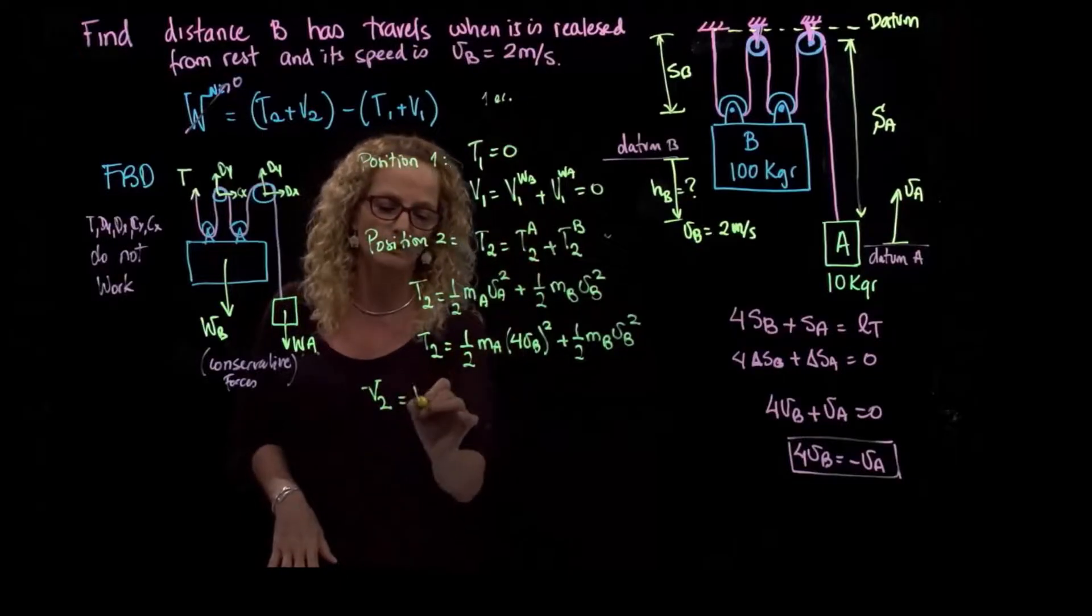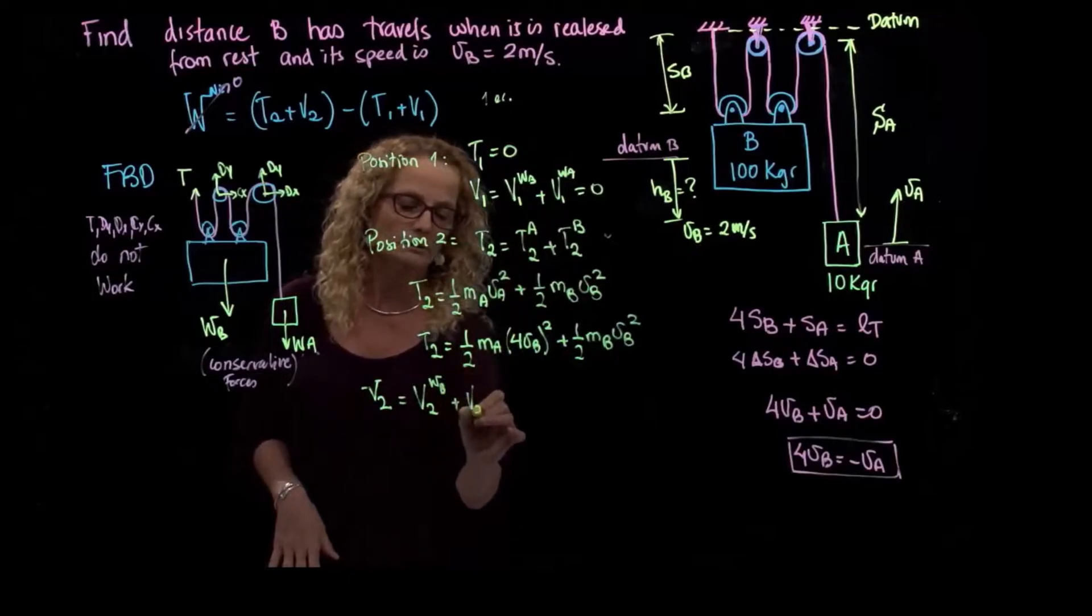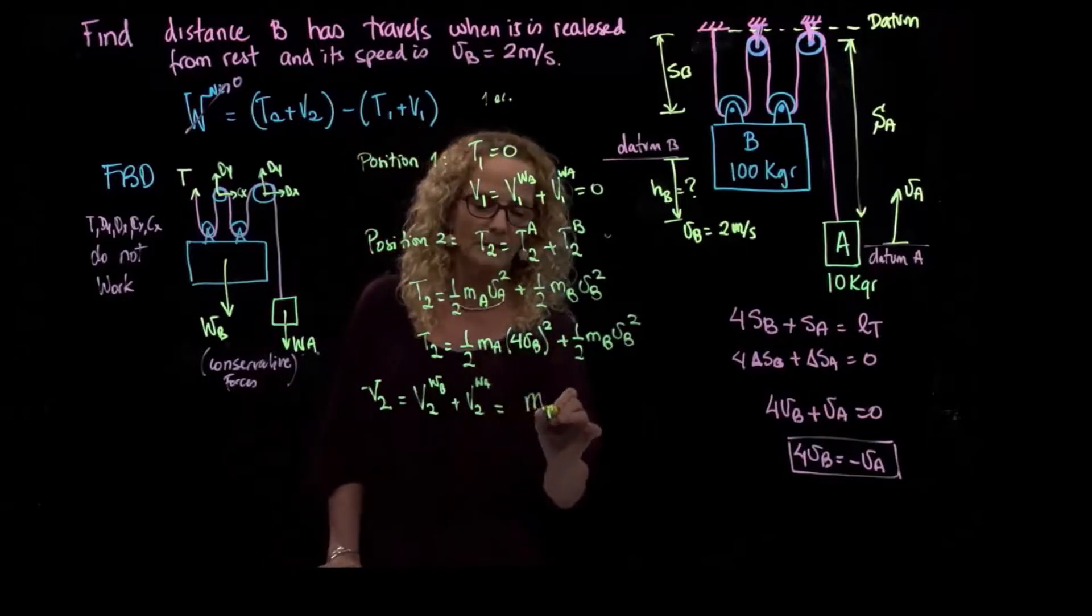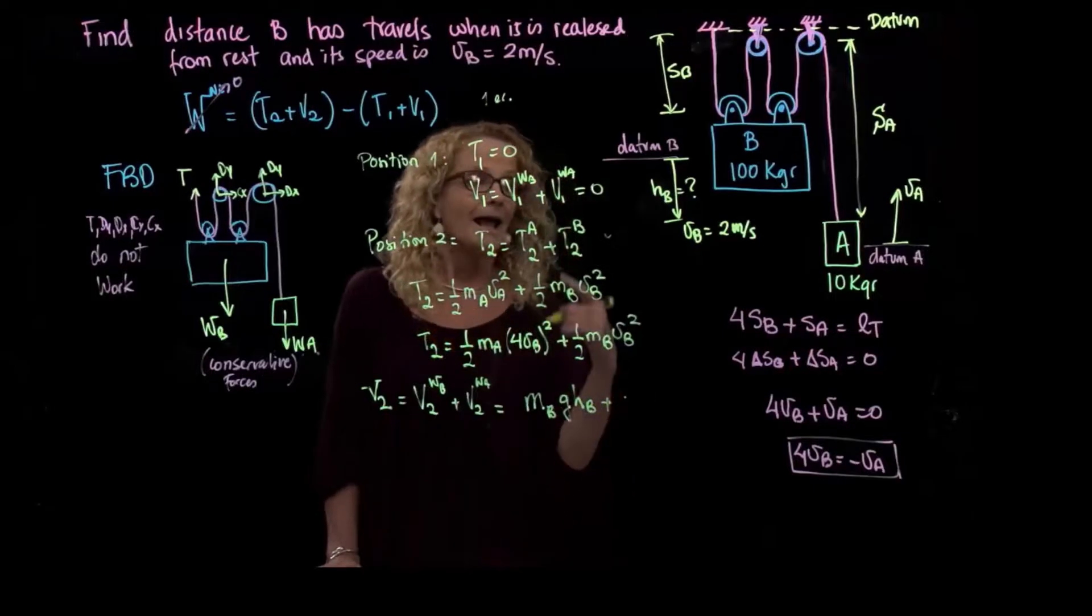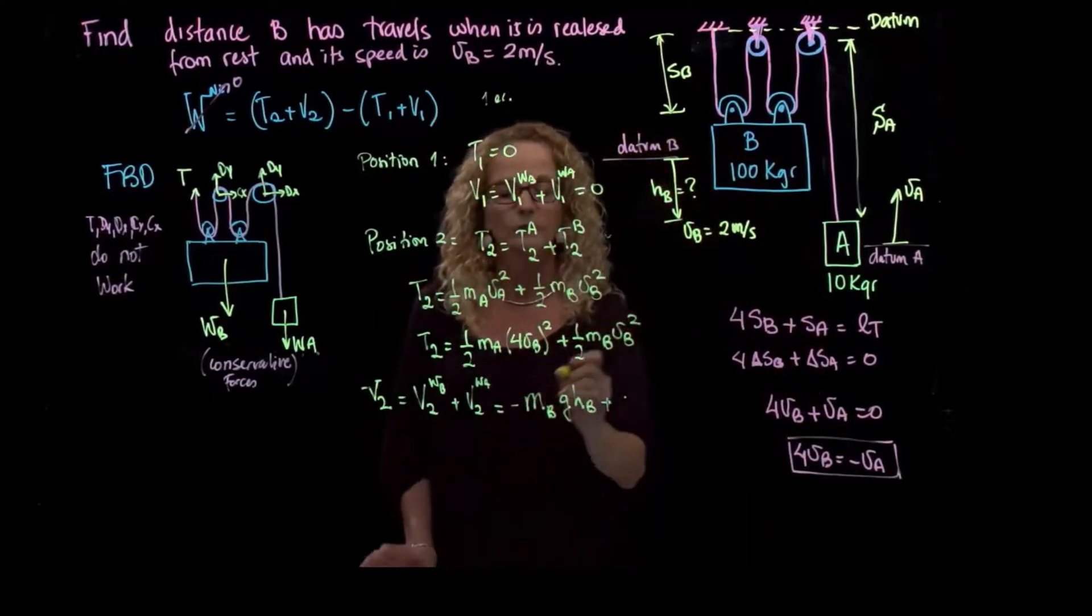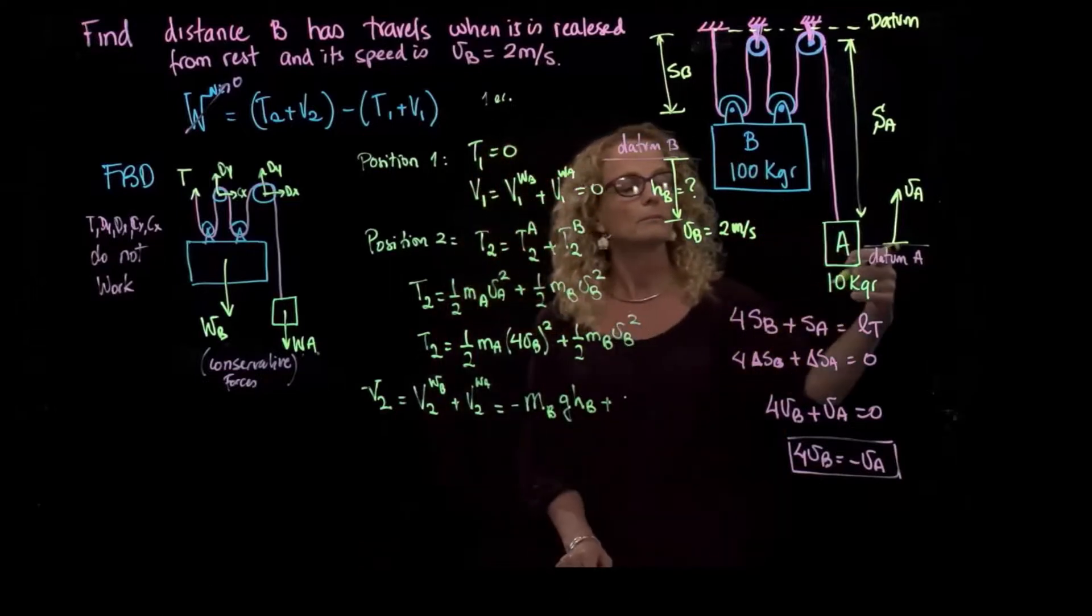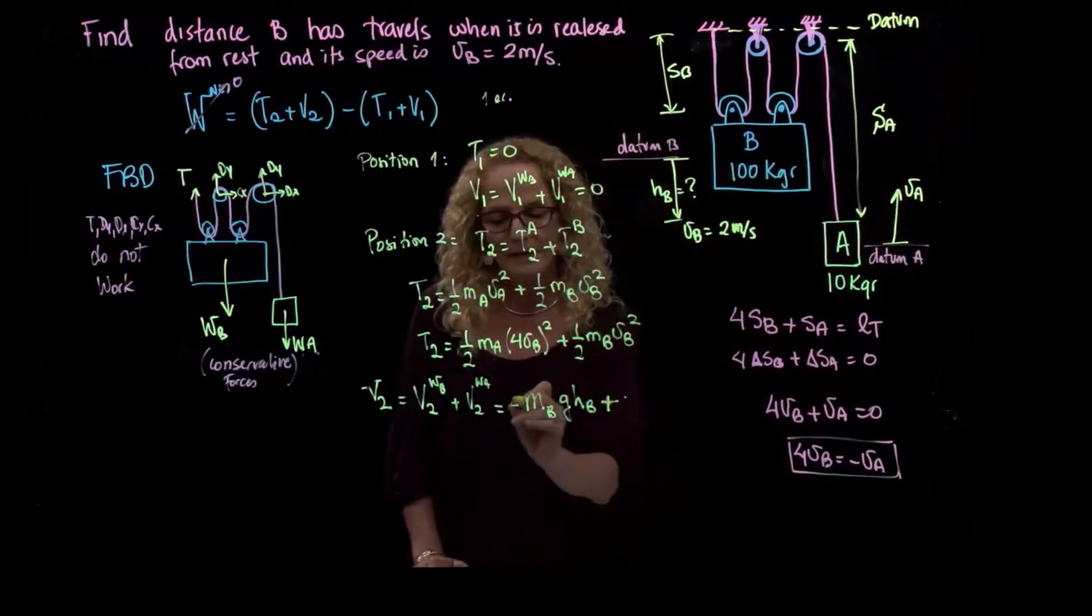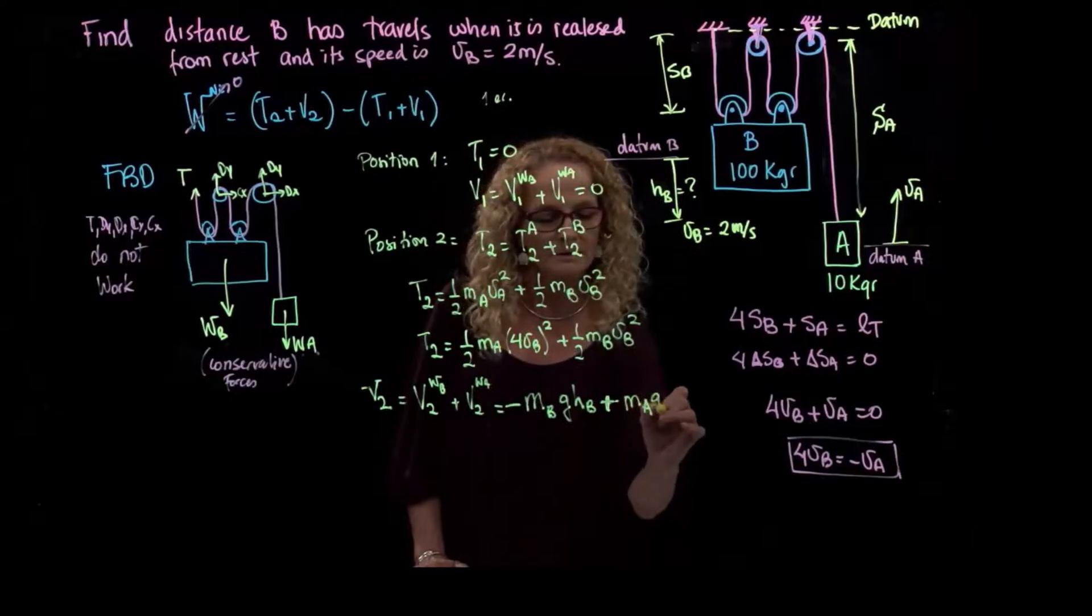So we already have this over here, and then we need to find the potential energy. The potential energy will be equal as well to the potential energy of weight B plus potential energy of weight A. And that will be equal to mass B, gravity, height of B, plus... And as you see, the block B is going down. So this is negative. It's losing potential energy with respect to the datum that we put here. And block A is rising. I am gaining potential energy, so this is positive. So this is a negative value, and this is a positive value.